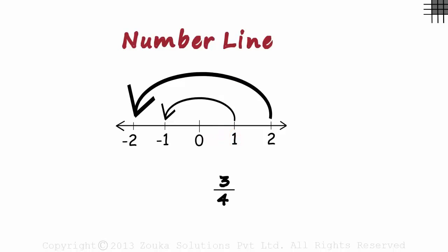This tells us that if we somehow manage to plot 3 by 4, we can mark a point at the same distance on the left hand side of zero, which is minus 3 by 4.